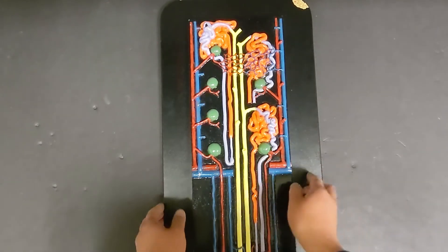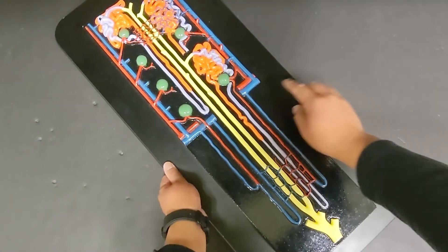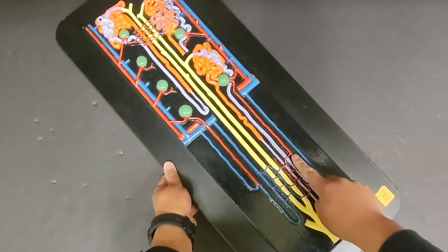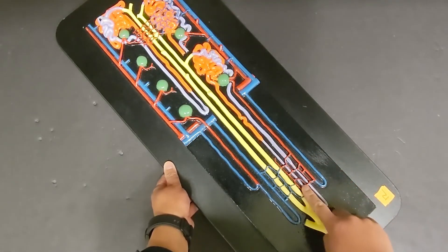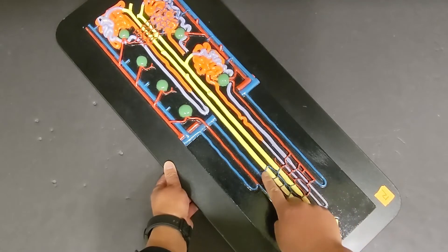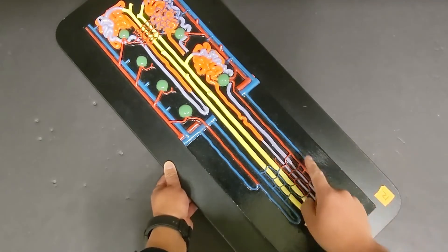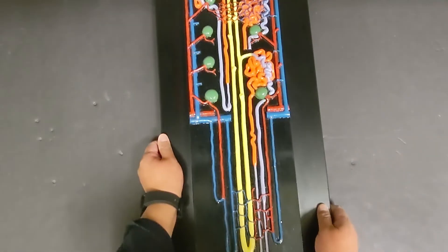But also you could see that the efferent arteriole leads down to surround the loop of Henle instead. And this is where you have what's called the vasa recta. And on the other side of either of those capillary beds,